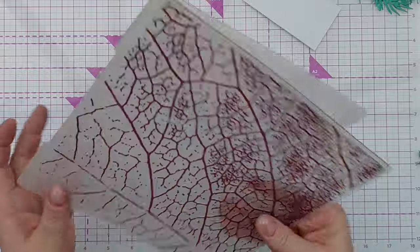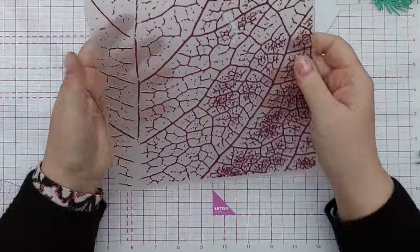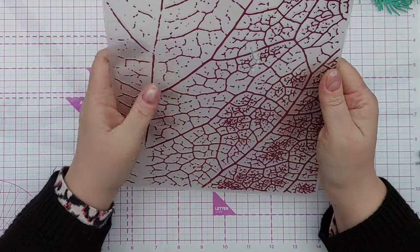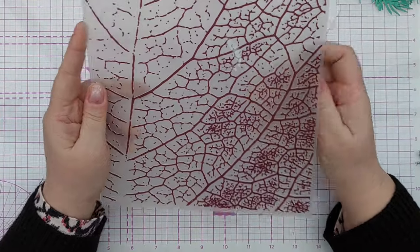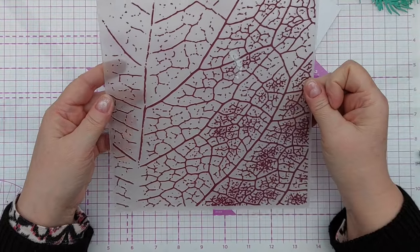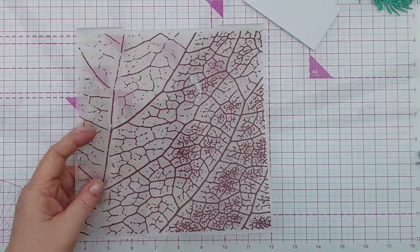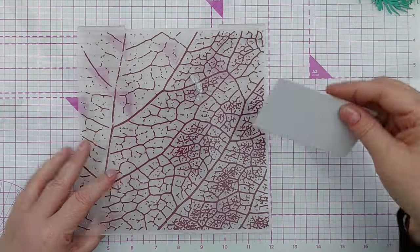I went into my local charity shop, the one that just sells craft supplies at the weekend and spent a little bit of money on some second-hand goods. And I found this large embossing folder with a leaf pattern on it and I think that would be perfect to emboss on the back of this.